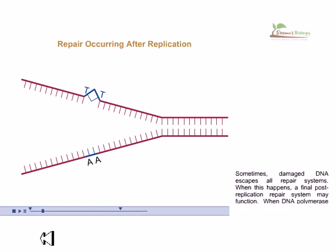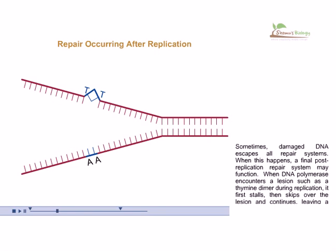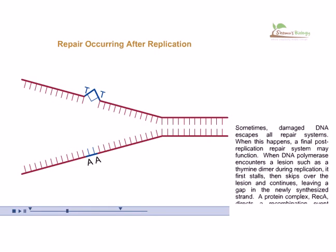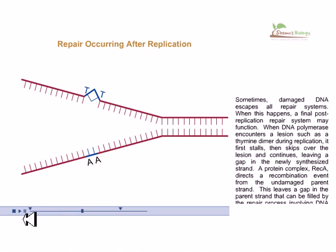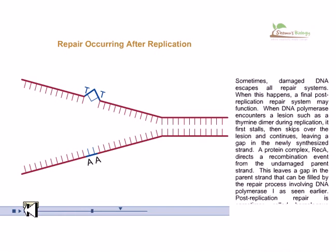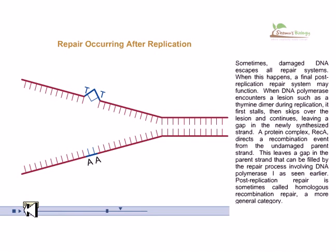Sometimes, damaged DNA escapes all repair systems. When this happens, a final post-replication repair system may function. When DNA polymerase encounters a lesion such as a thymidine dimer during replication, it stalls, then skips over the lesion and continues, leaving a gap in the newly synthesized strand.